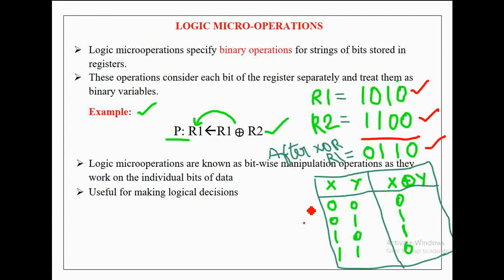Here truth table for XOR operation is given. If the values of X and Y are 00 then its XOR value will be 0. If the values of X and Y are 01 or 10 then its XOR value will be 1. And if the values of X and Y are 11 then its XOR value will be 0.